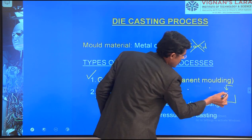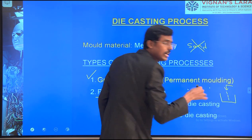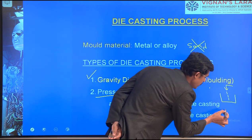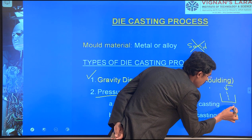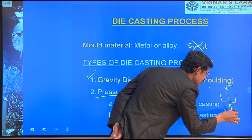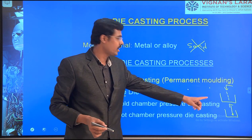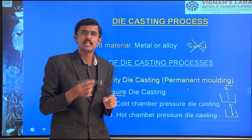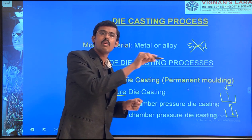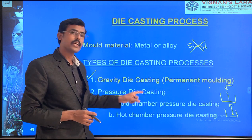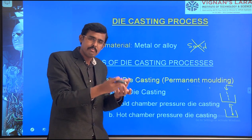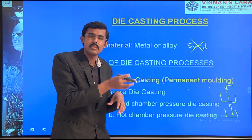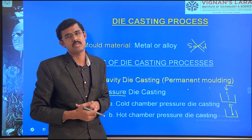In gravity die casting, due to gravity the metal comes down. In pressure die casting, the metal is injected and reaches minute holes and corners that gravity alone cannot fill. The intricate designs cannot be made in gravity die casting. We will see them one by one.